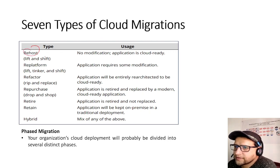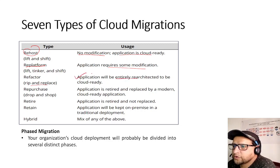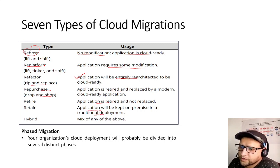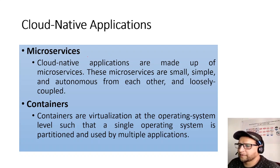Seven migration strategies: Rehost — lift and shift with no modification, application is cloud-ready. Re-platform — lift, tinker, and shift with minor modifications. Refactor — rip and replace, entirely rearchitect the application to be cloud-ready. Repurchase — retire and replace with a modern cloud-ready application (drop and swap). Retire — application is retired and not replaced. Retain — application is kept on-prem in traditional deployment. Hybrid — a mix of the above. Know these seven migration types.